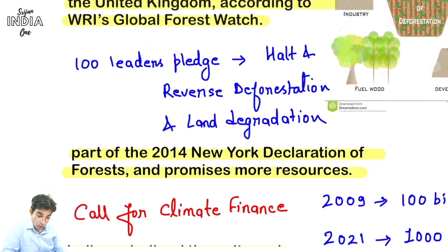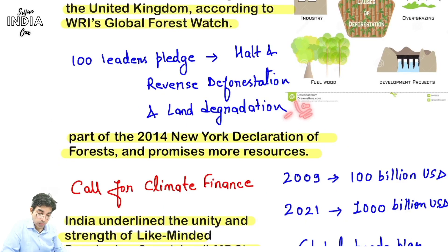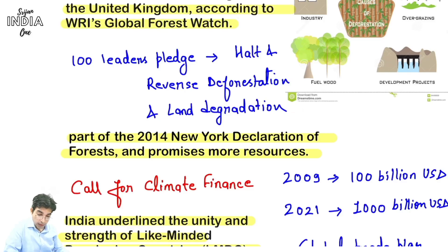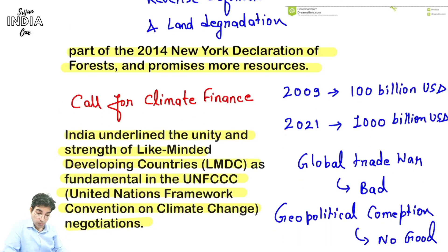The point is bahut tezi se forest deforestation ho raha hai, toh 100 leaders ne pledge kiya - halt karo, roko is deforestation ko aur reverse karo ise. Miyawaki technique bhi padha tha hain - deforestation se reforestation jaana hai. Land degradation jo ho raha hai usko stop karna hai - jaise Chambal ke beehaad hain, unka reason kya hai land degradation ka? 2014 mein ek New York Declaration aaya tha forest ka - usne bhi yahi baat kiya tha ki deforestation ko kam karna hai. Yeh hui pledge number 2.